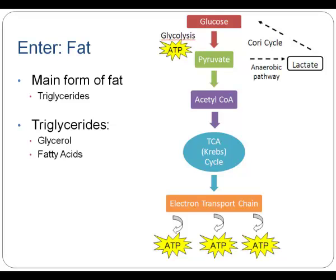Now let's look at where fat enters this cycle. Triglycerides are the primary form of fat found both in our body storage and in the food we eat, so we'll look at the breakdown products of triglycerides: glycerol and fatty acids. Glycerol is the backbone of the triglyceride and makes up a very small proportion of the molecule, so most of the energy from triglycerides comes from fatty acids. Glycerol enters this cycle at pyruvate, which can then go down to the electron transport chain to produce a large amount of ATP, or if there is not adequate oxygen, go through the Cori cycle to convert to lactate and regenerate some glucose.